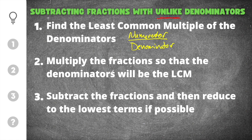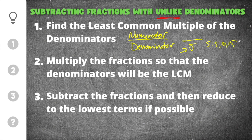What we're going to do is multiply the fractions so that the denominators will be the least common multiple. Typically the easiest way to do this is to take the denominator and list all of its multiples. Let's say the denominator is 5 — we would list 5, 10, 15, 20, and so on, until we got a match with the other denominator.